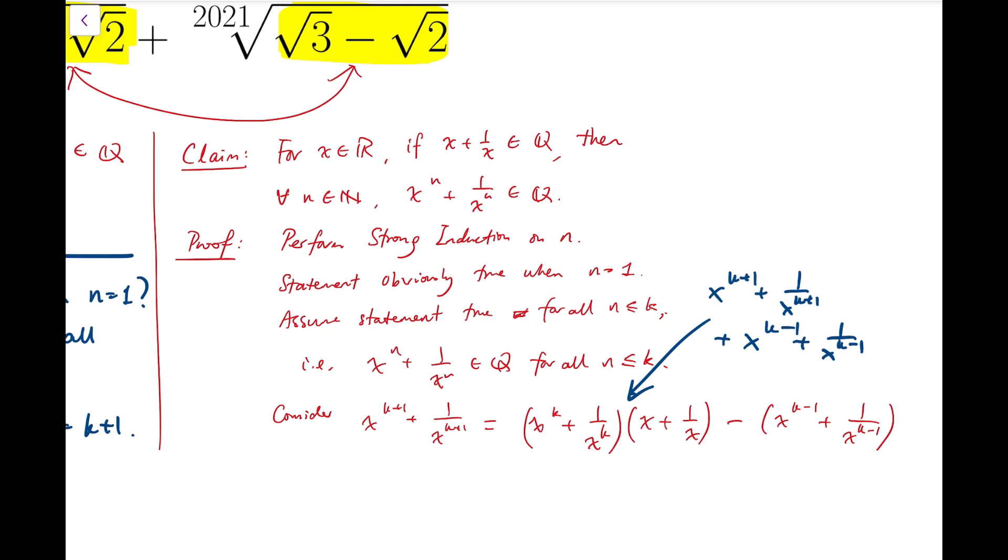Now these three terms, they're actually all rational numbers by the induction hypothesis, because this expression x to the k minus 1 plus 1 over k minus 1, plus x to the k plus 1 over x to the k, are all rational.